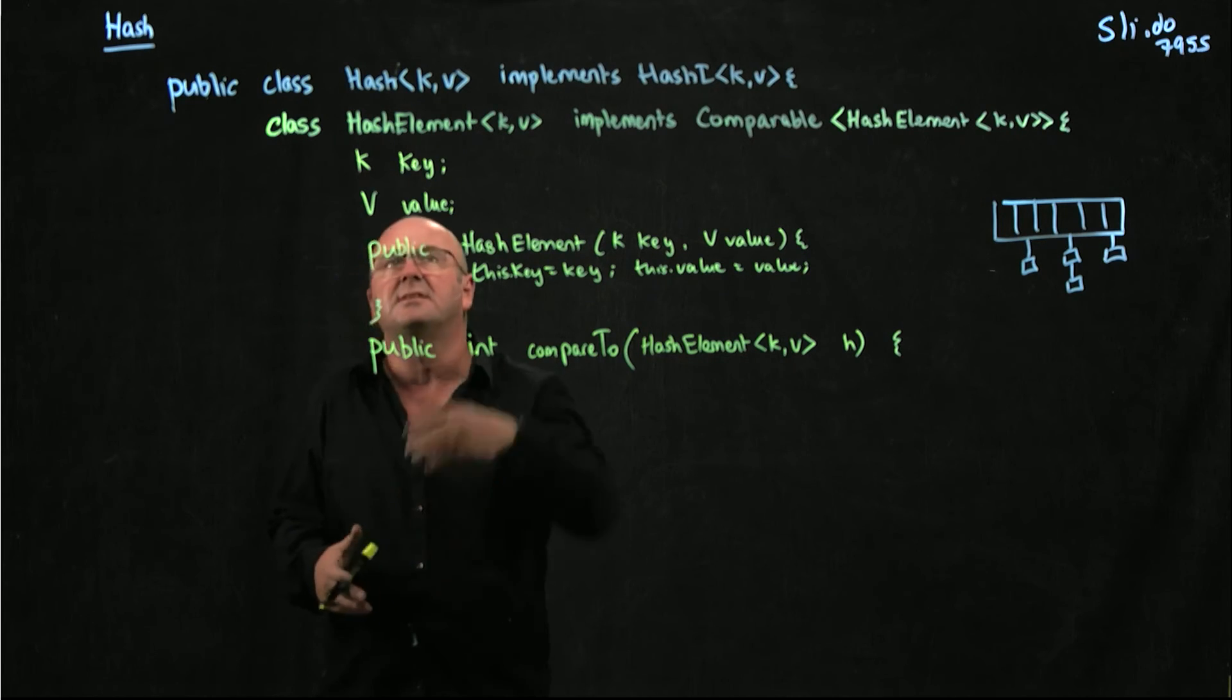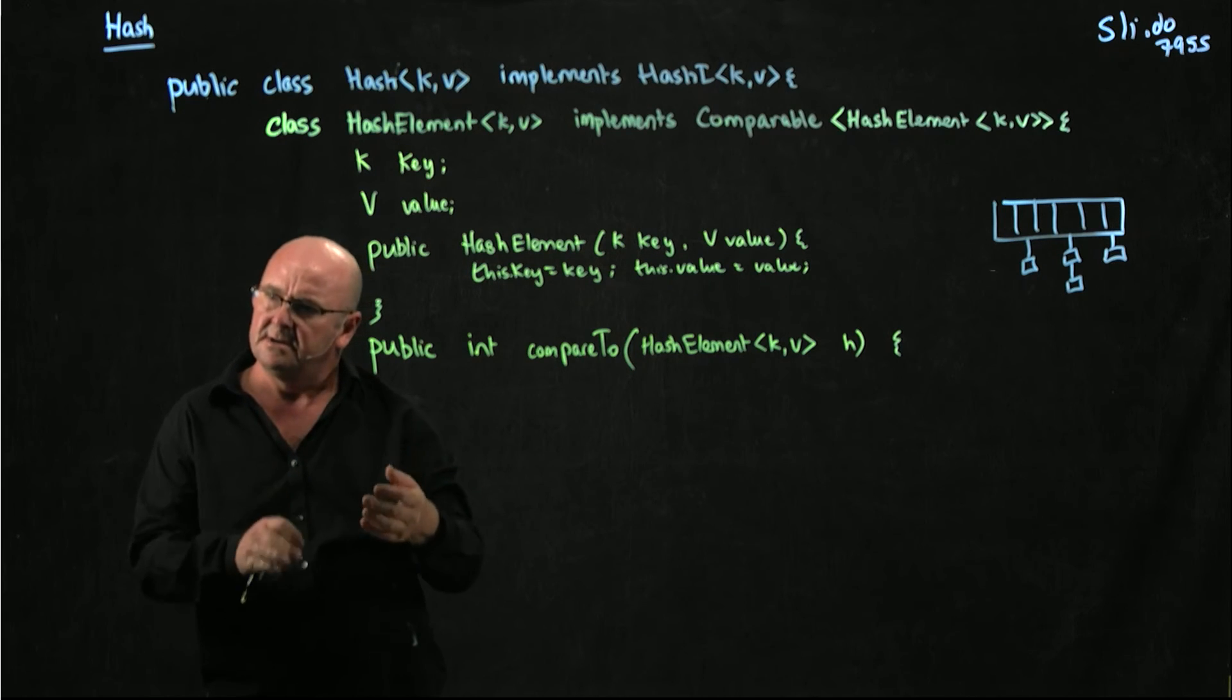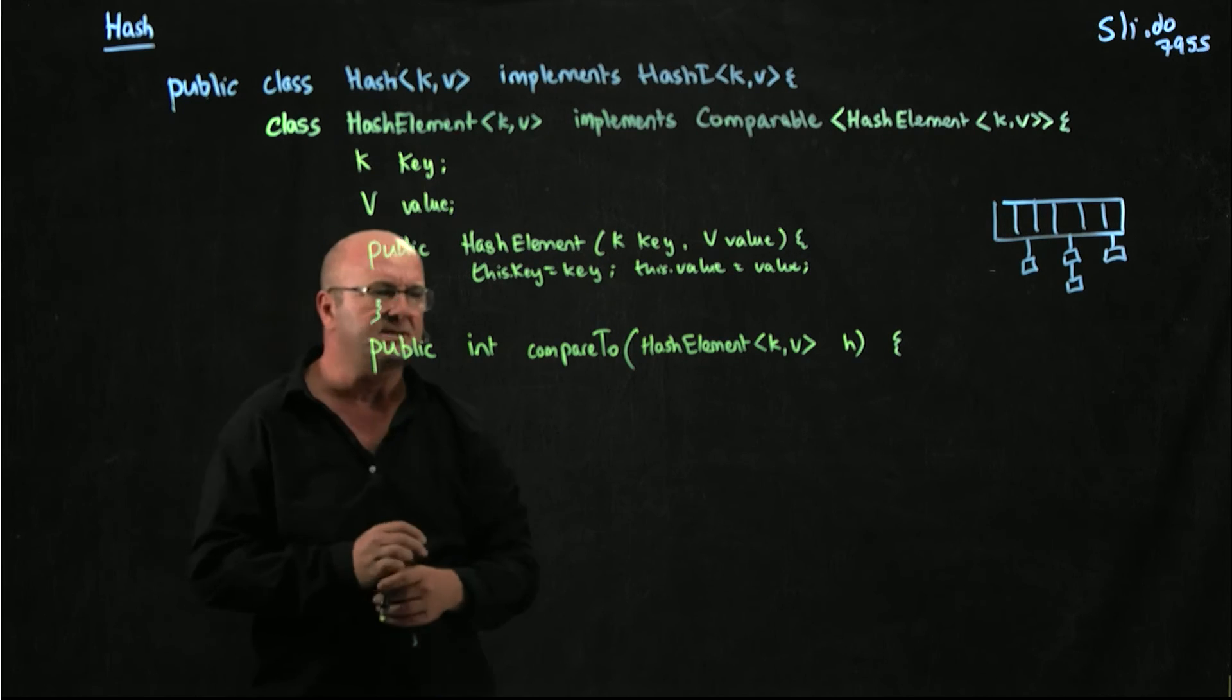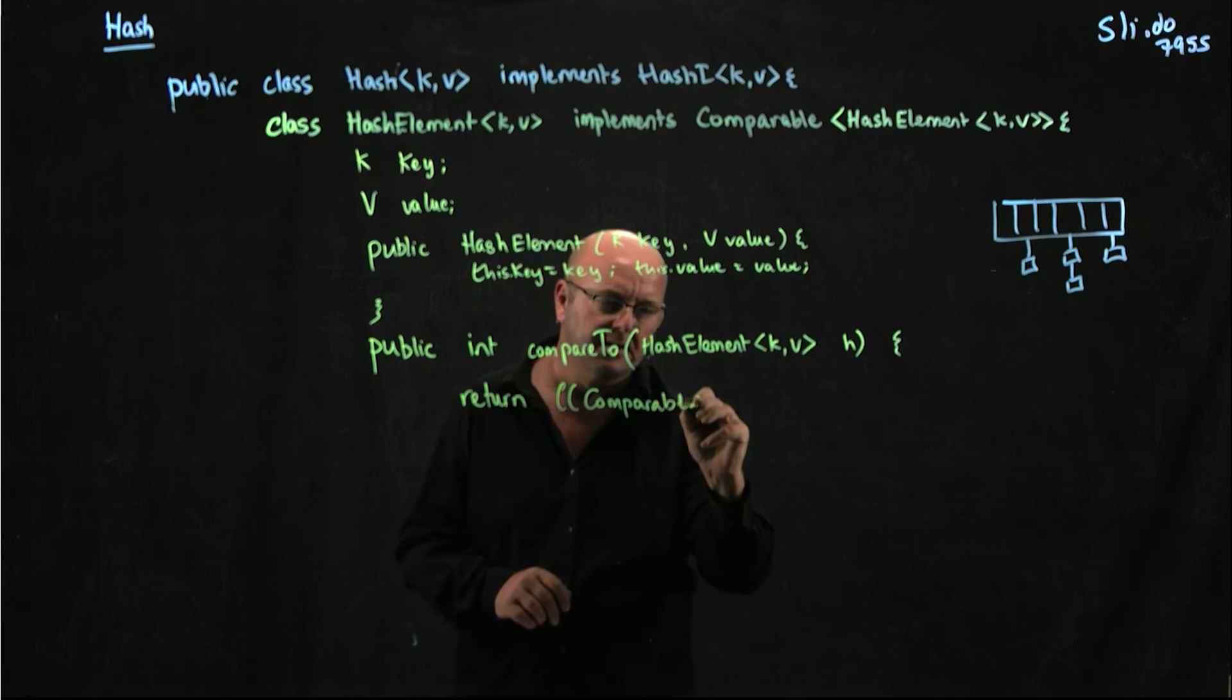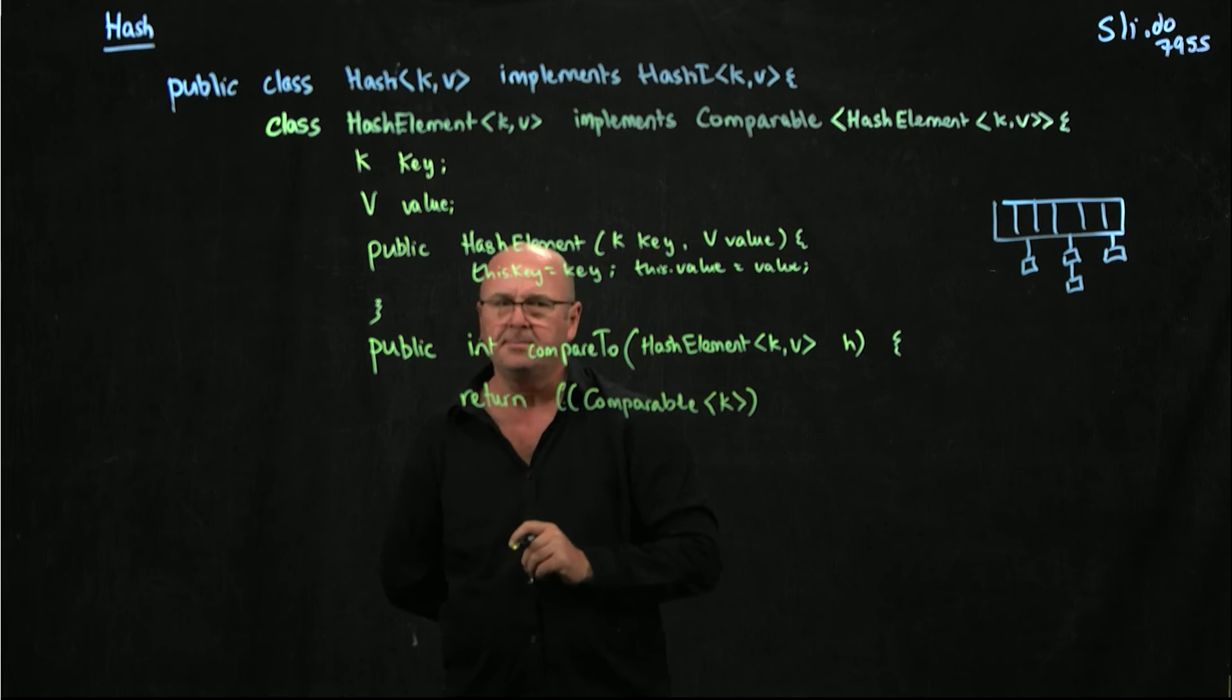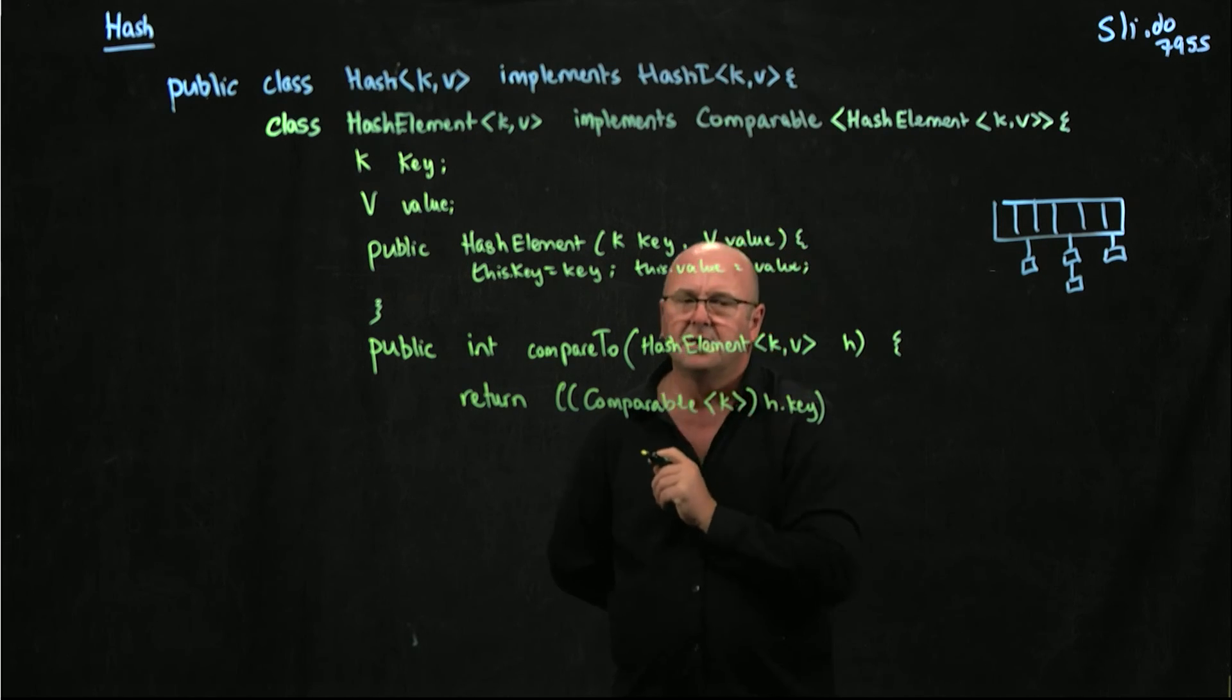But we don't really know what those keys are going to be because they're generics, right? They're generic K's. So let's actually punt and let whoever is using our hash, right, their compareTo method. And we'll make them do that by casting that to Comparable. So we can just return. And all we have to do is cast our key to Comparable K. And we've got an H here, so we'll cast H.key. And we're going to compare that.